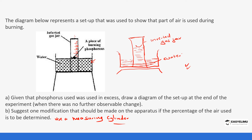This brings us to the end of the active part of air. Make sure you go through the other videos to review the different experiments for this subtopic. Next, we will look at the other components of air and how we can test them, and then we will conclude this topic. I'll see you in the next session.